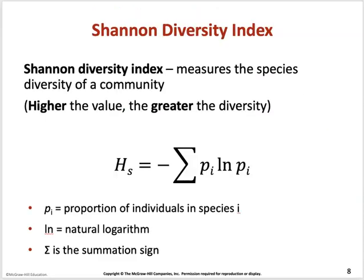To measure species diversity, we use the Shannon Diversity Index. The higher the value, the greater the diversity. The formula is H = −Σ(pᵢ × ln(pᵢ)), where pᵢ is the proportion of individuals belonging to species i. Because the natural log is always negative, we take the negative summation to ensure the index is always positive.